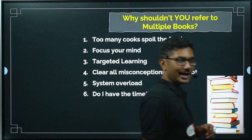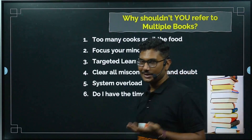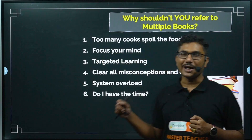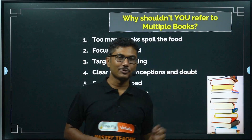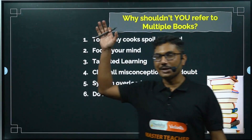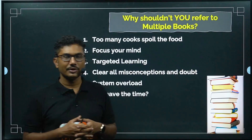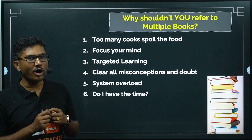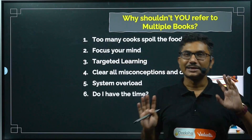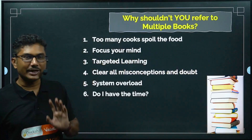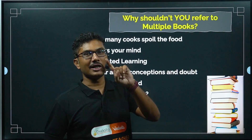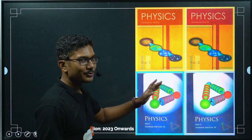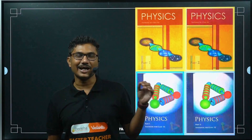Another reason is time. You are studying four core subjects — Physics, Chemistry, Maths, and Biology. Do you have time to study five books for biology, five for chemistry, five for physics, and ten for mathematics? Obviously not. Tune your mind: finish the books you have first, then move to the next.